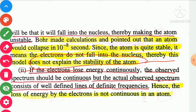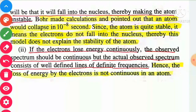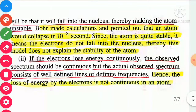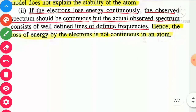Also remember: if the electron loses energy continuously, the observed spectrum should be continuous, but the actual observed spectrum consists of well-defined lines of definite frequencies. Hence, the loss of energy by the electron is not continuous in an atom. Thank you, students.